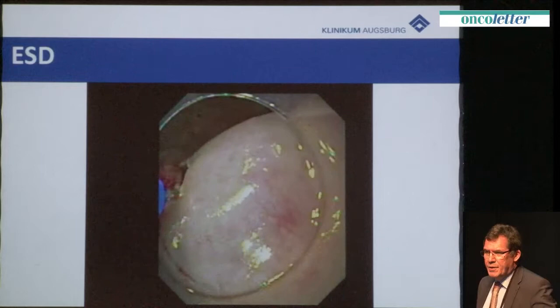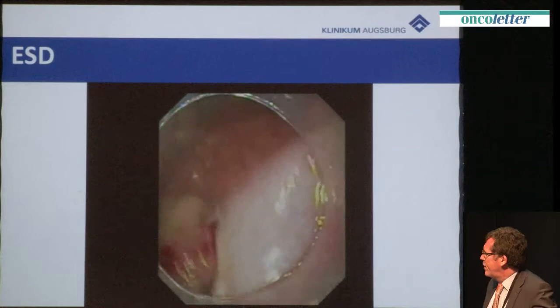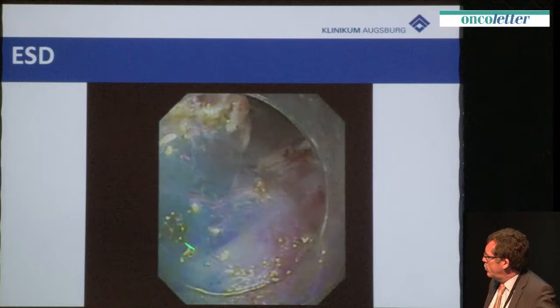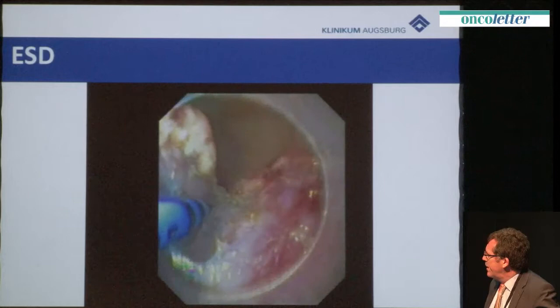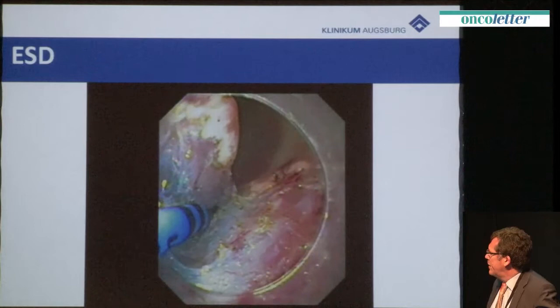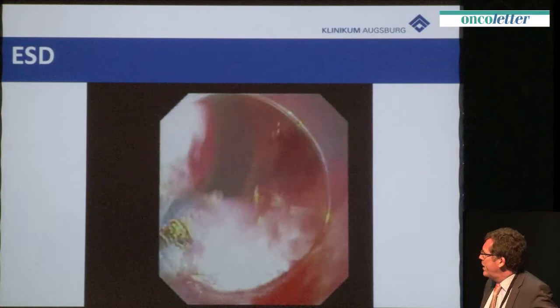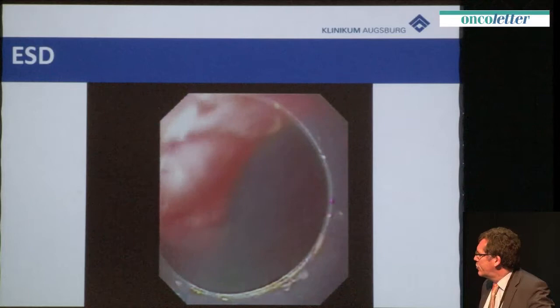We started this treatment 10 years ago and I have learned a lot from my colleagues in Japan, who also teach in my clinic. It takes time when you start this technique. Meanwhile we have more than 500 patients treated with ESD in my clinic. The blue color is indigo carmine, which helps to identify exactly where you are working in the submucosa. Step by step you dissect the whole lesion. This procedure takes time — in this situation it was two hours for a resection area of more than 10 cm — and it was a mucosal cancer with no additional surgical treatment necessary.